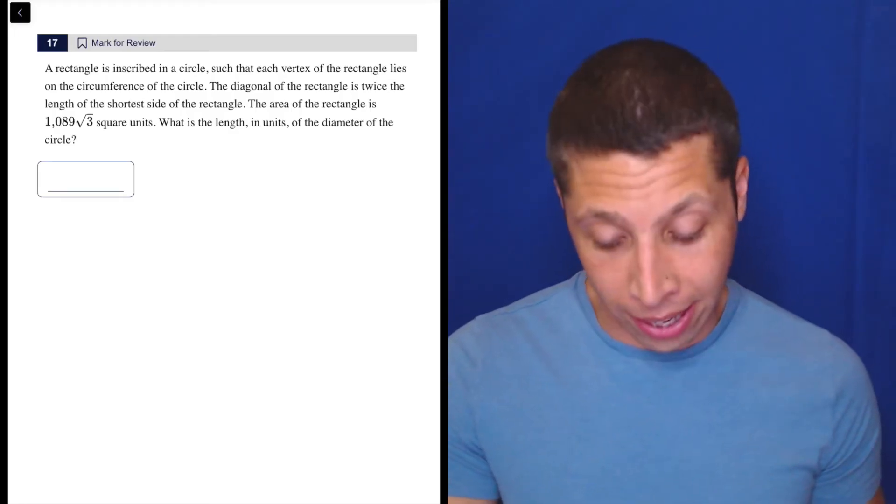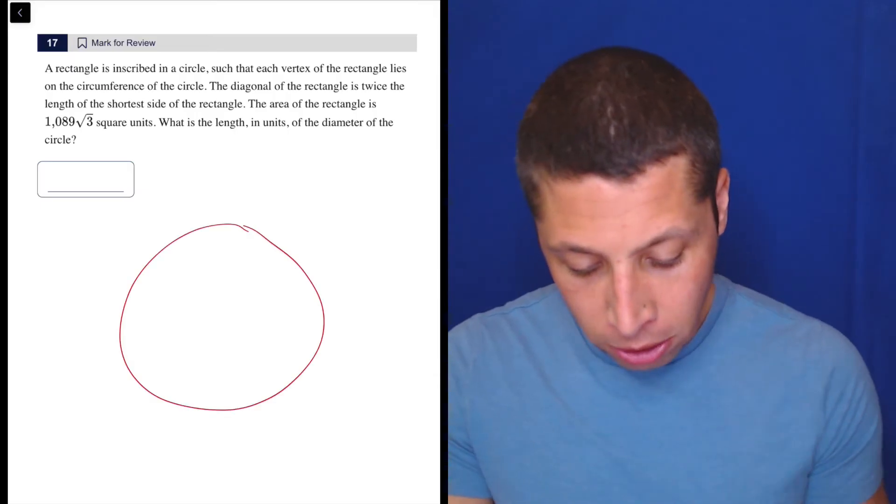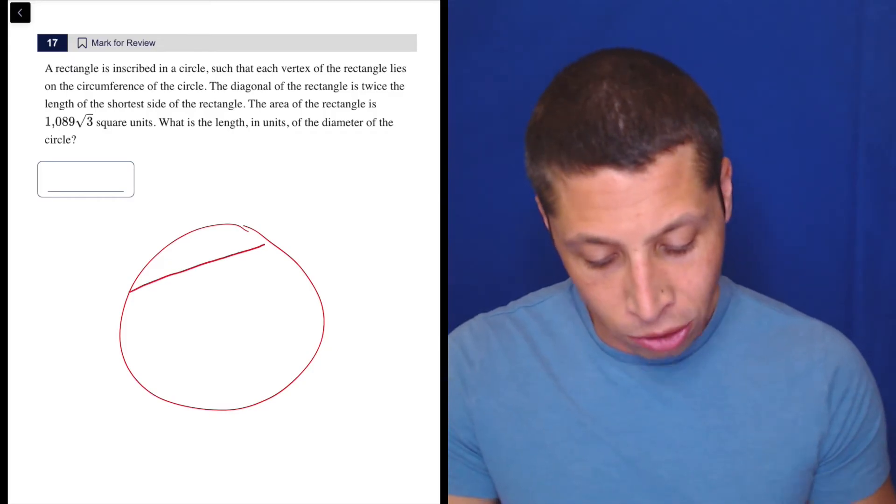So let's start by drawing what they said. A rectangle is inscribed in a circle. So okay, here's my circle. A rectangle is inscribed such that each vertex of the rectangle lies on the circumference. Okay, so just draw a rectangle here.